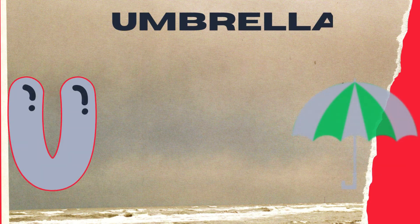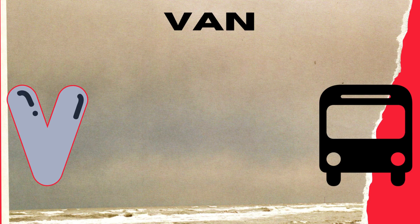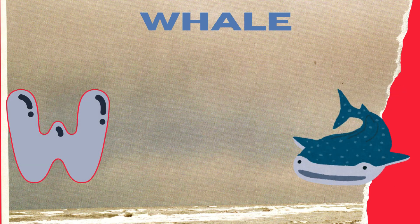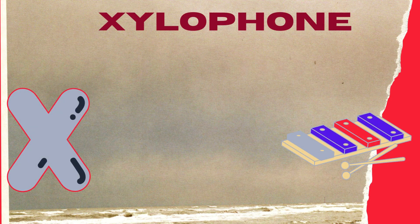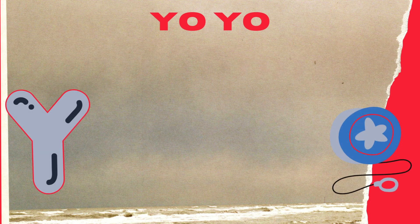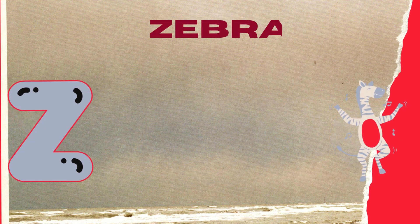T for toy, U for umbrella, V for van, W for whale, X for xylophone, Y for yoyo, Z for zebra.